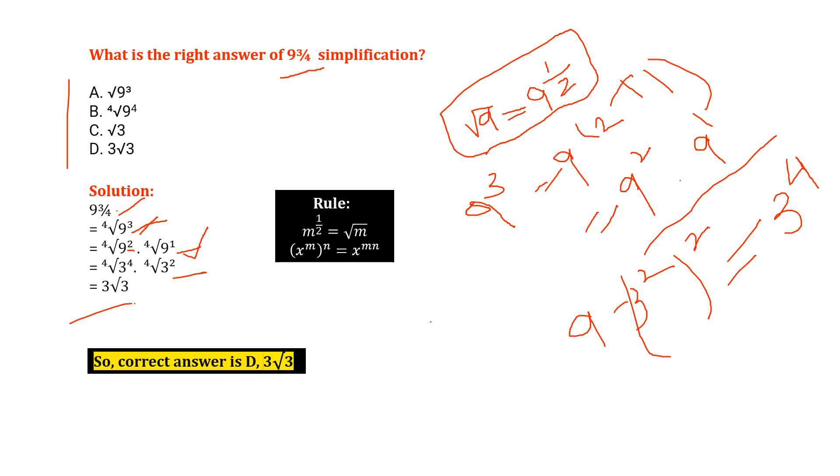So we have here root 3, 4 divided by 4, so that is only root 3. And how we get the root 3?